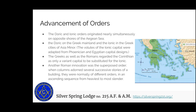The orders advanced historically: Doric and Ionic happened around the same time on opposite shores of the Aegean Sea — Doric starting on the Greek mainland, and Ionic on the eastern side of Asia Minor. The Ionic volutes were adapted from Phoenician and Egyptian capital design. The Greeks and Romans regarded Corinthian as just a variant of Ionic — essentially the bottom is the same, you just have variations on the top and the capital.